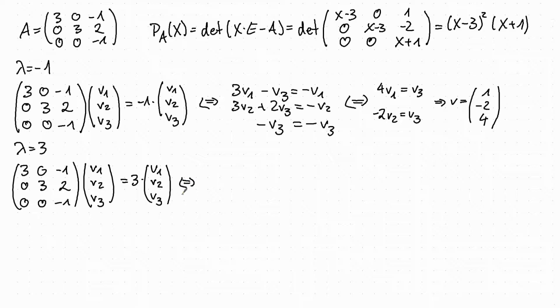Again, this gives us a system of linear equations. The first one is 3v1 minus v3 equals 3v1. The second one is 3v2 plus 2v3 equals 3v2. And the last one is minus v3 equals 3v3. This condition tells us that v3 has to be 0.